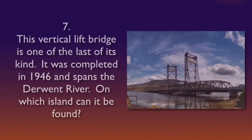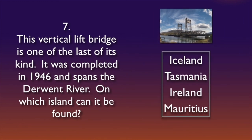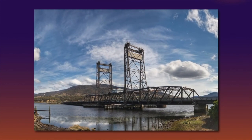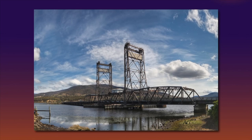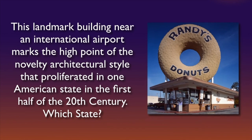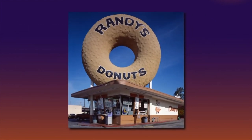Question 7: the island where the bridge can be found is Tasmania. The Bridgewater Bridge is pictured — it's a road and rail bridge in Hobart, Tasmania. And Question 8: the American state is California. Randy's Donuts is a bakery and landmark building in Inglewood, California, near Los Angeles International Airport.